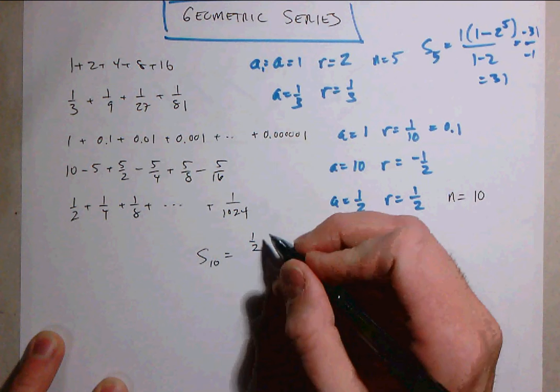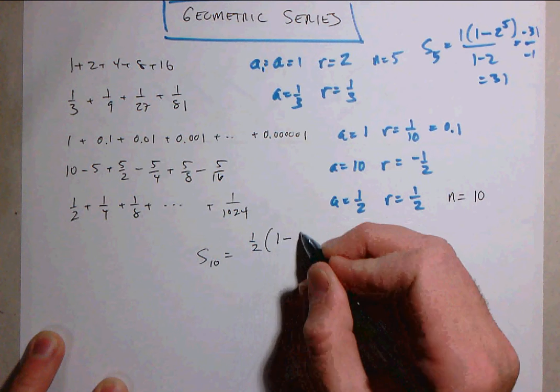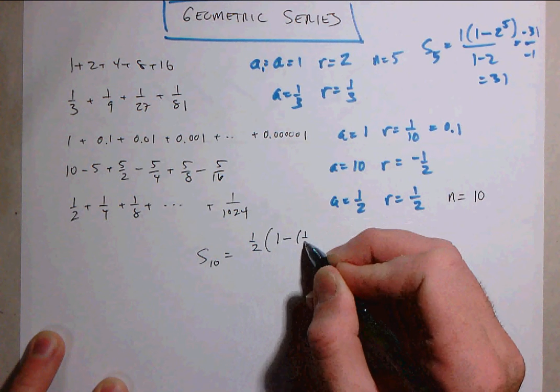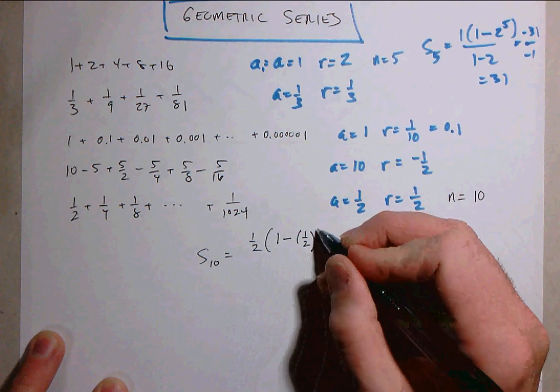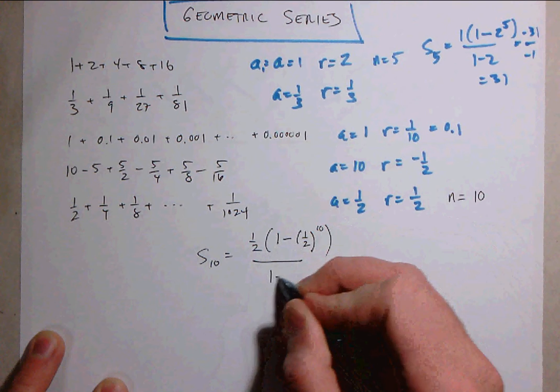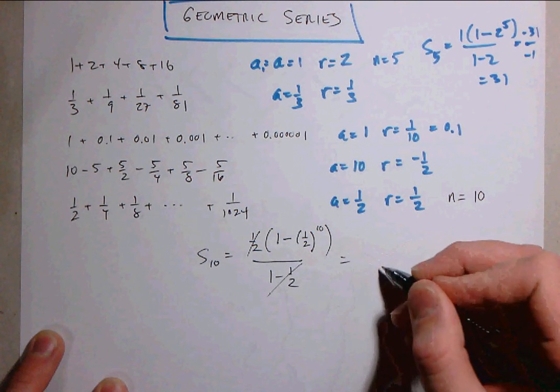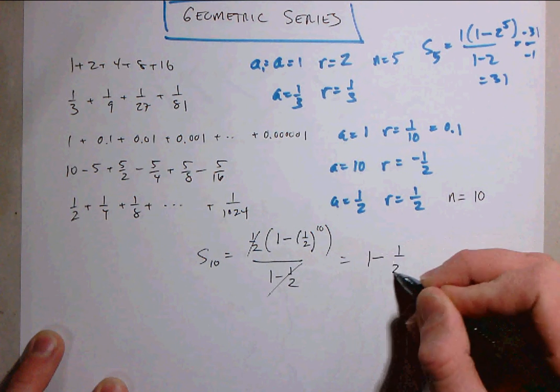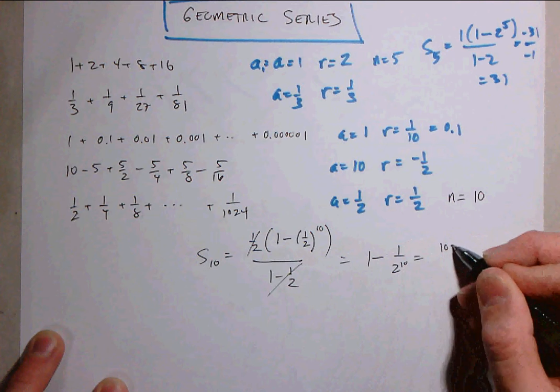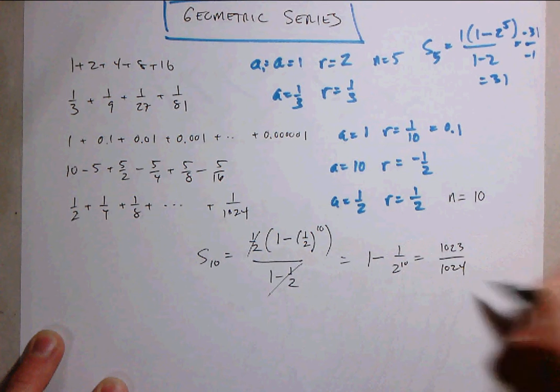The first term is a half. This is 1 minus the common ratio, 1 half to the 10th, over 1 minus the common ratio. Notice this is a half and this is a half.